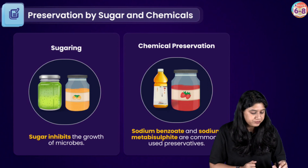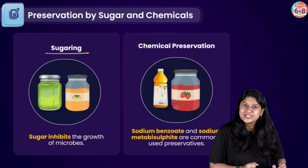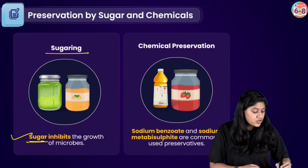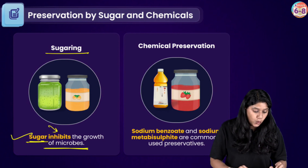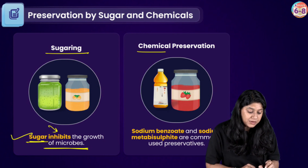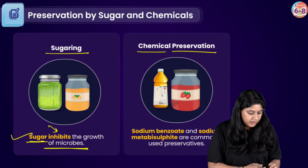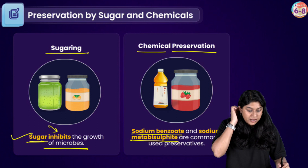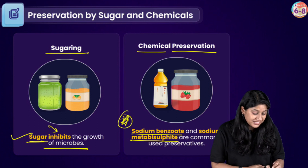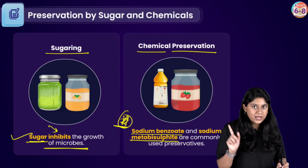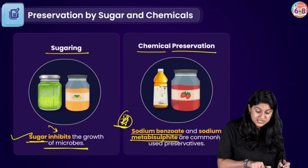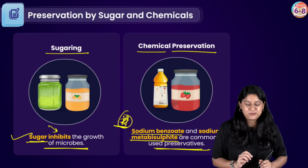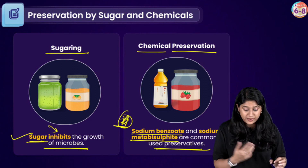Then let's talk about sugaring. In sugaring, we add sugar — your jams and jellies are made by using sugar — and sugar actually inhibits the growth of microbes. Further, we have chemical preservation using chemicals like sodium benzoate and sodium metabisulfite. These are very important chemical preservatives that are commonly used in foods. Please take note of these.